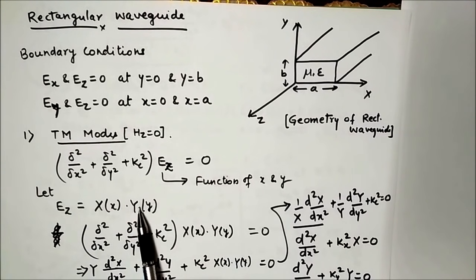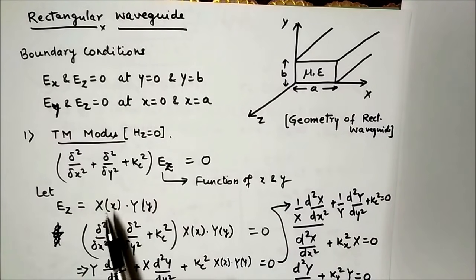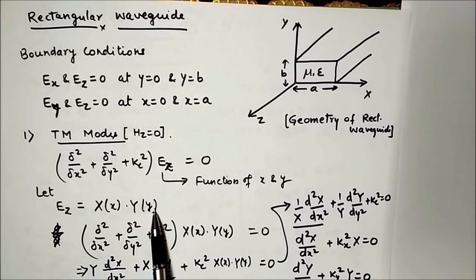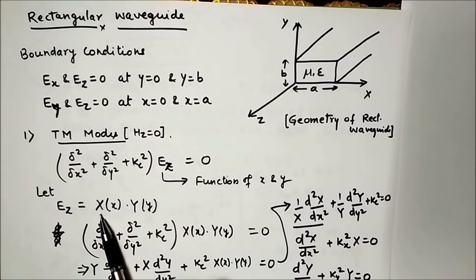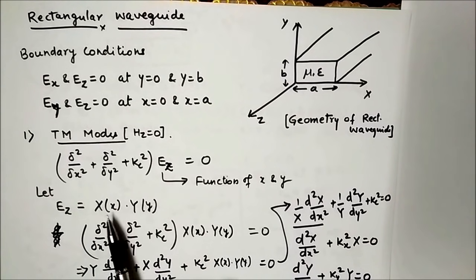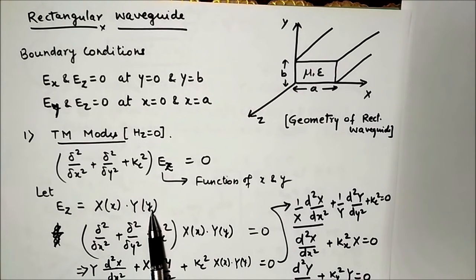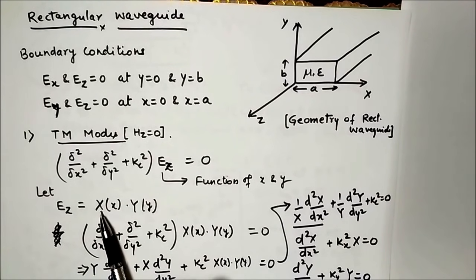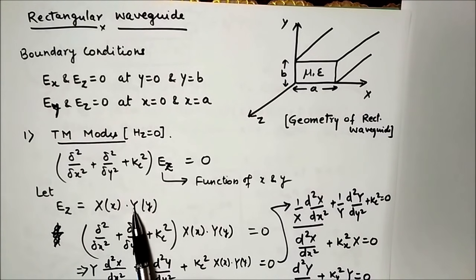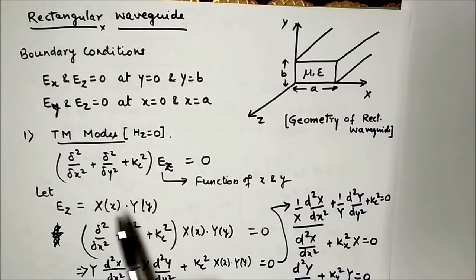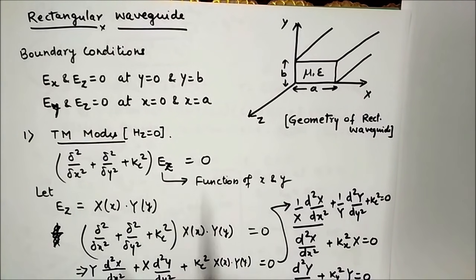In the separation of variables method, we consider Ez as a multiplication of two different functions: X, a function of x only, and Y, a function of y only. Capital X means it is a function of x, and capital Y is a function of y.